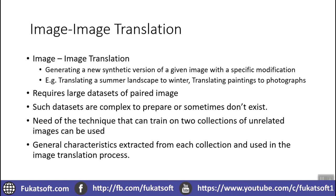When we need to do image-to-image translation using generative networks through a generation process, we need paired examples. For instance, to convert a low resolution image to a high resolution image, we need a pair: a low resolution image and a corresponding high resolution image.